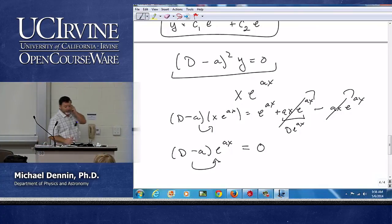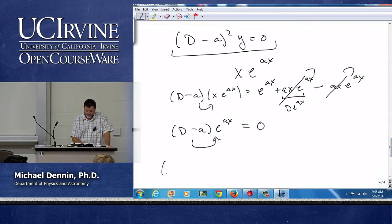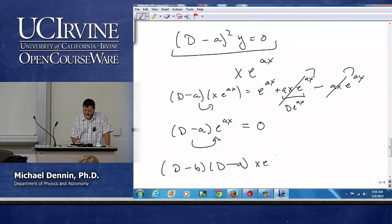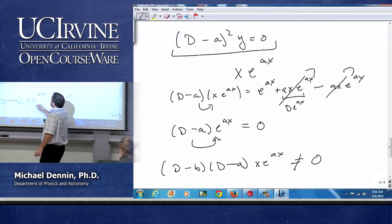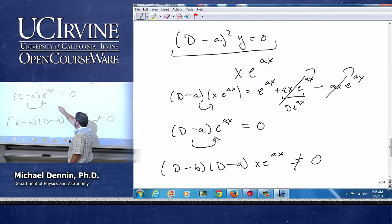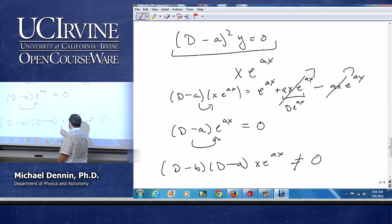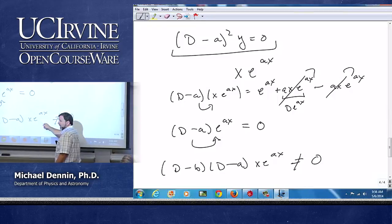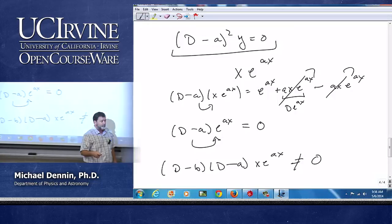Notice, we can see right away that if I have two different roots, this will not equal zero. Because the first d minus a will give me that up there, and then d minus b on e to the ax is not zero, because b doesn't match a. So this is not a solution for the non-double root case. And so it's only a special solution with double roots.